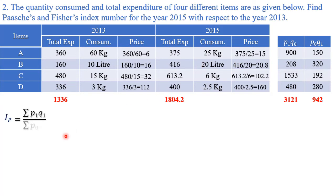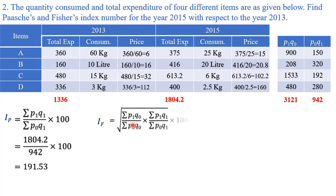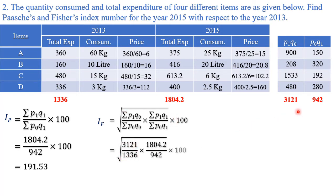Paasche's index number = p1·q1 / p0·q1 × 100 = 1804.2 / 942 × 100 = 191.53. Since Laspeyres' index number is not separately asked, I will use the alternate formula for Fisher's: √[(p1·q0 / p0·q0) × (p1·q1 / p0·q1)] × 100.